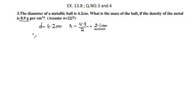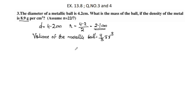The volume of the metallic ball is equal to 4 by 3 pi r cube. We apply 4 by 3 into pi, which is 22 by 7, into r cube. r is 2.1, cubed means multiplied 3 times.